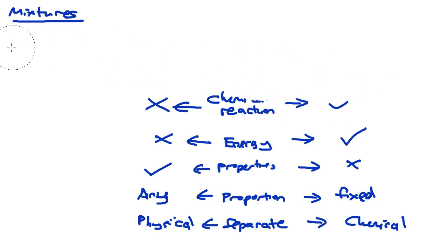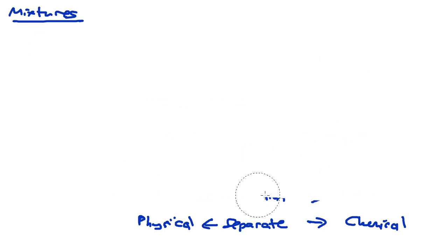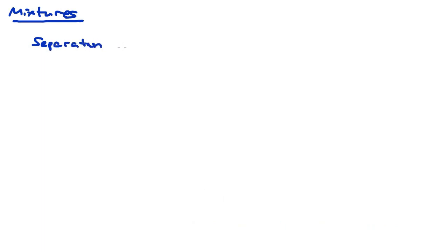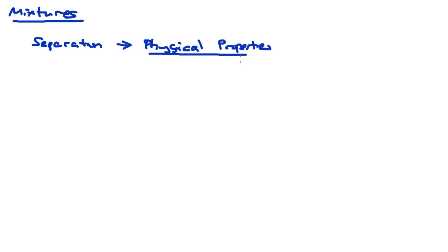We are now going to look at what the separation methods are. To separate the substances within a mixture, we have to make use of the different physical properties of the elements or substances within the mixture itself. We are actually relying a lot on the physical properties of the individual substances.